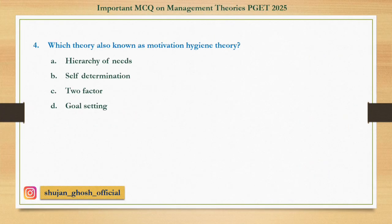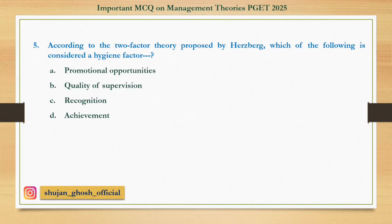Question number 4: Which theory is also known as the motivation-hygiene theory? Option A: Hierarchy of needs. B: Self-determination. C: Two-factor. D: Goal setting. Answer is Two-factor. Question number 5: According to the two-factor theory proposed by Herzberg, which of the following is considered a hygiene factor? Option A: Promotional opportunity. B: Quality of supervision. C: Recognition. D: Achievement. Answer is Quality of supervision.